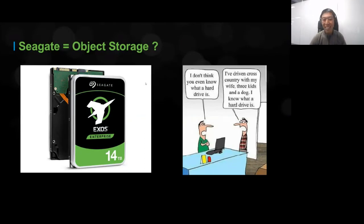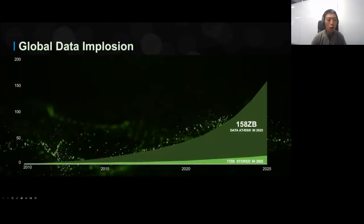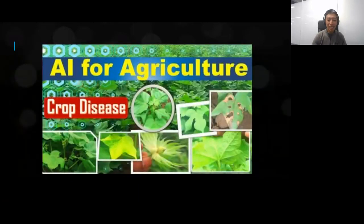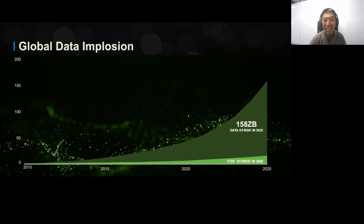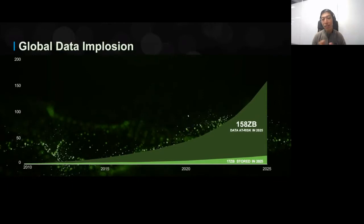Let me talk about why object storage and software is important to us at Seagate. We have to talk about this global data implosion. The IDC thinks that by the end of 2025, we're going to have about 158 zettabytes of data being produced. But we only think that 17 zettabytes, a small percentage of that, will actually be stored. So our customers every day have to make decisions based on their data not being stored.